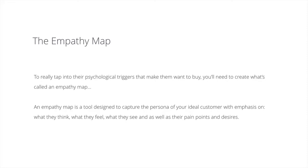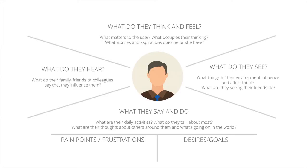The empathy map is a tool designed to help you tap into the psychological triggers that make your customers want to buy. It captures the persona of your ideal customer with emphasis on what they think, what they feel, what they see, and what they do — and it highlights their pain points and their desires. It's a really useful tool to get inside the head of your potential customers. The empathy map has four main quadrants, plus pain points and frustrations on the left, and desires and goals on the right. All you need to do is ask the right questions to fill it out.